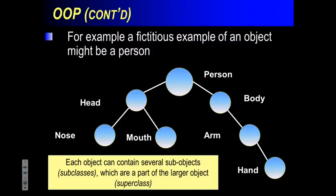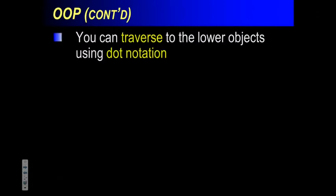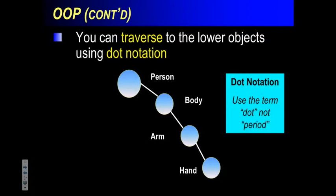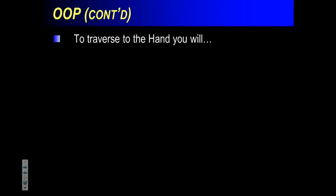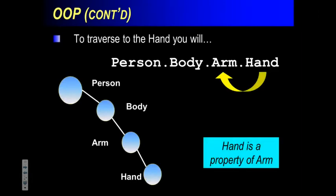To go through this organization, we use what's called dot notation — dot, not period. And when we traverse through them, that means to travel. So if I want to get to the hand, I'd say: person dot body dot arm dot hand. Using the dot in our code, we can access things that sort of travel through the hierarchy. Objects also have properties — size, color, shape. I can read the properties and I can also change them: for example, head dot size equals large, or head dot color equals green.